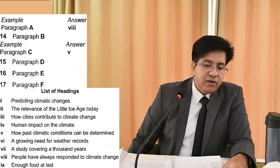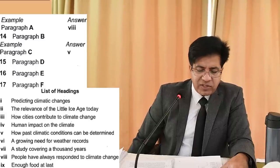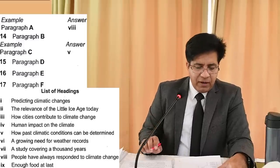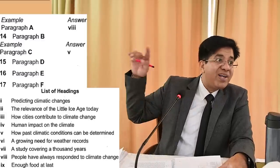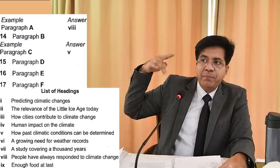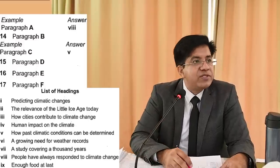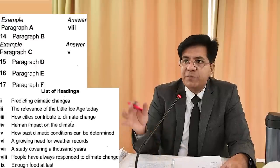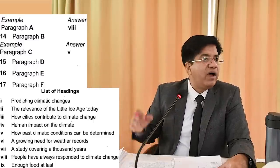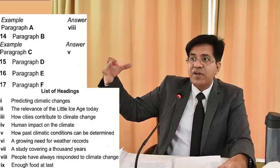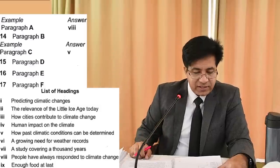When reading headings, don't read the heading number or the article. For example, heading two is just 'relevance of little ice age today.' Heading five — past climatic conditions, how they can be determined — will use past tense. Heading six: 'growing need for weather records.' Heading seven: 'study covering a thousand years' — a study of ten centuries.